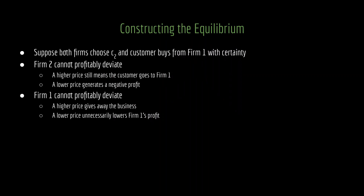To understand why this is an equilibrium, let's suppose that both firms choose C2 as their price, and the consumer, being indifferent, chooses to buy from firm 1 with certainty. Let's think about profitable deviations for firm 2. There aren't any. If firm 2 were to set a higher price, then all of the business will still go to firm 1 — so that's not a profitable deviation. If firm 2 were to set a lower price, that would actually get firm 2 some of this business; it would assuredly get the consumer to shop with firm 2. The problem is that if you set the price lower than your marginal cost, you will have a negative profit from that transaction. So firm 2 cannot profitably deviate.